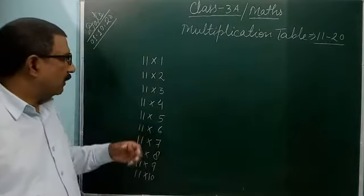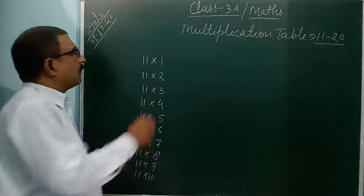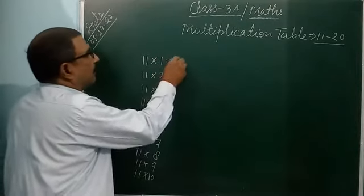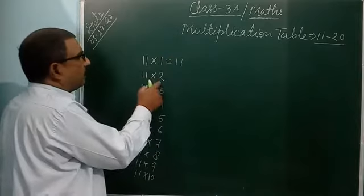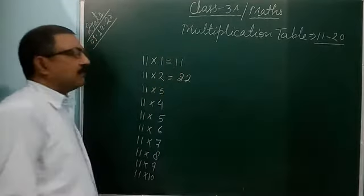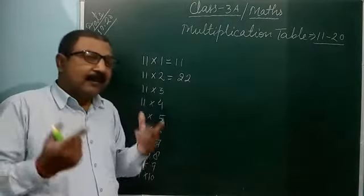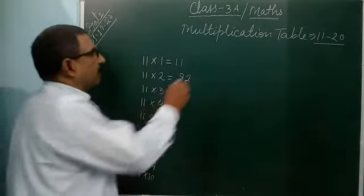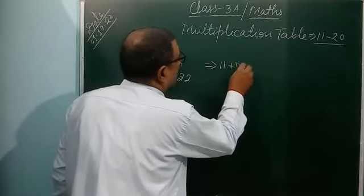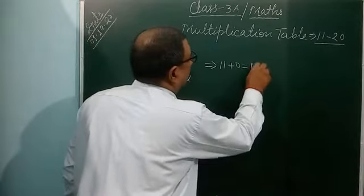So you can multiply 11 with 1 to 10 and after that you can write the result. Write the result — 11x1 is 11. What does it mean? It means 11 is added with 11 only one time, so you can say 11 plus 0 is equal to 11.